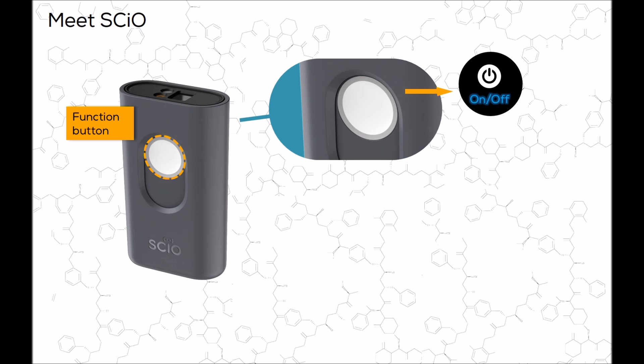Hold the function button for more than one second to turn SCiO on until it blinks blue, signaling you to sync your phone with SCiO. After syncing, when SCiO is ready to scan, the notification ring will turn solid blue. To turn SCiO off, press the function button for three seconds, and SCiO and the notification ring will turn off.